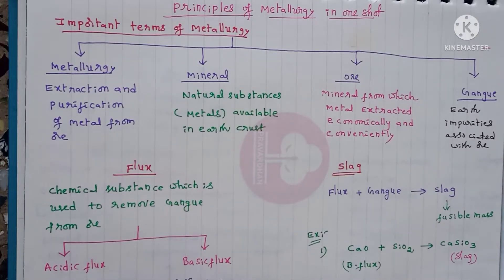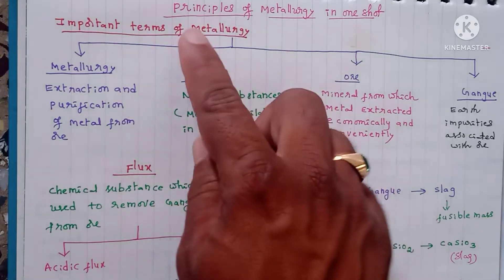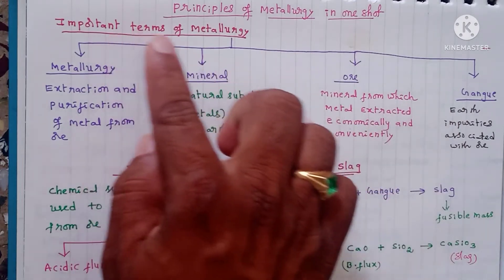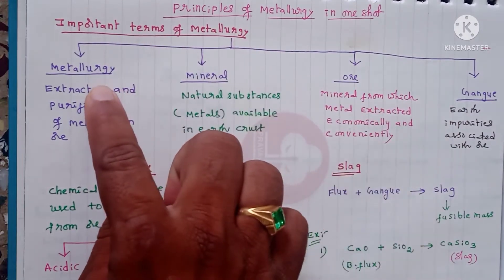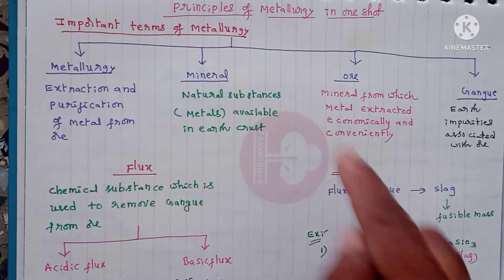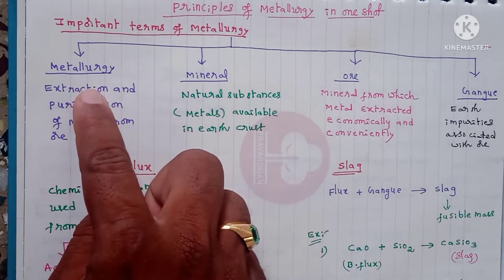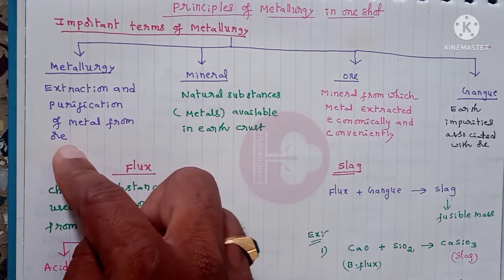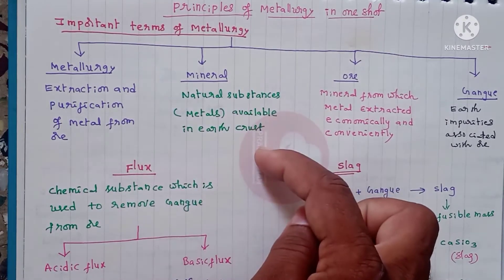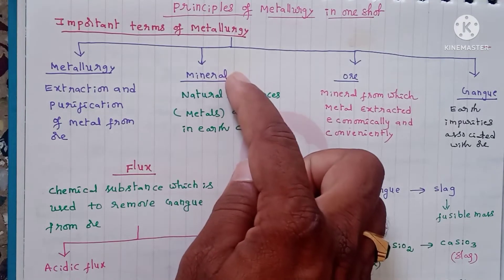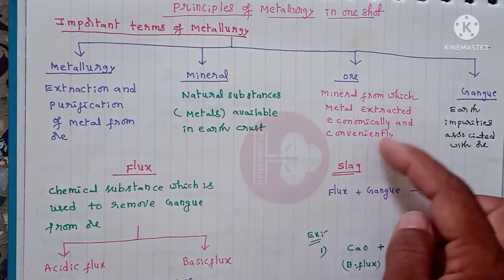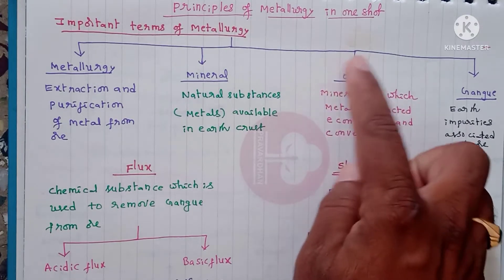In this video I am going to discuss the principles of metallurgy chapter in one shot. The important terms in this chapter are: metallurgy, mineral, ore, gangue, flux, and slag. Metallurgy means extraction and purification of metal from ore. Minerals are the natural substances available in the earth's crust. The minerals from which metals can be extracted economically and conveniently are called ores.